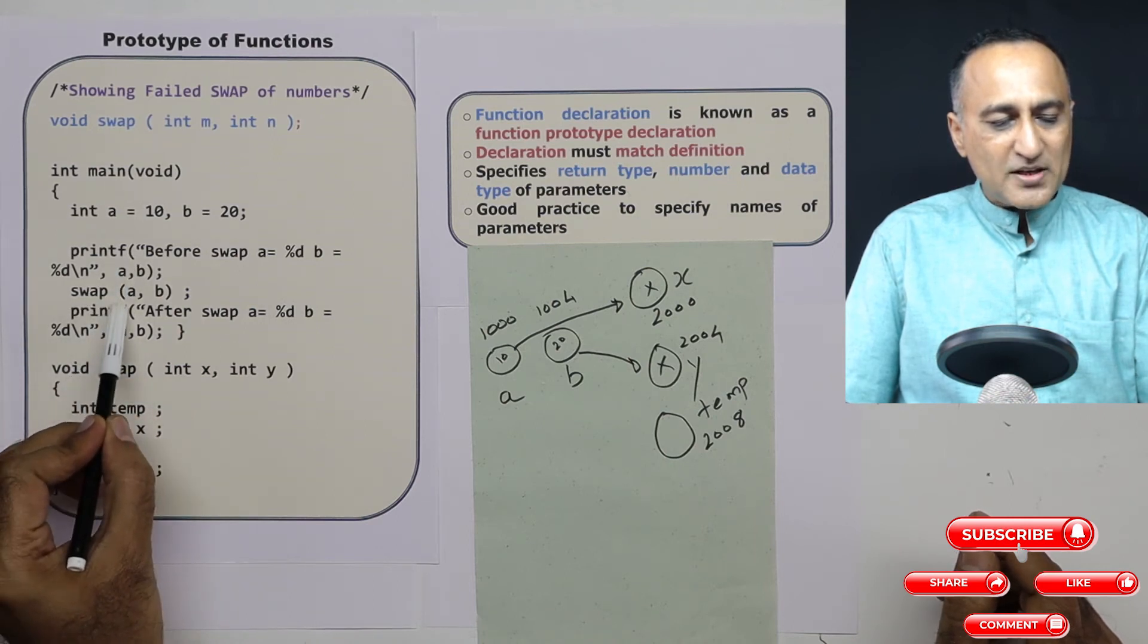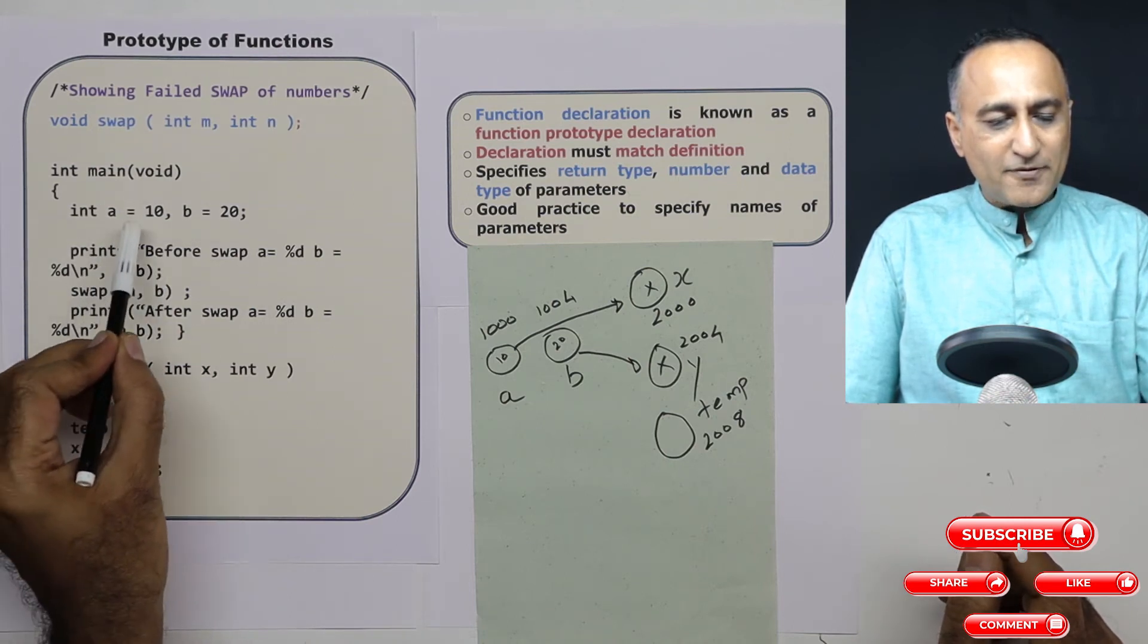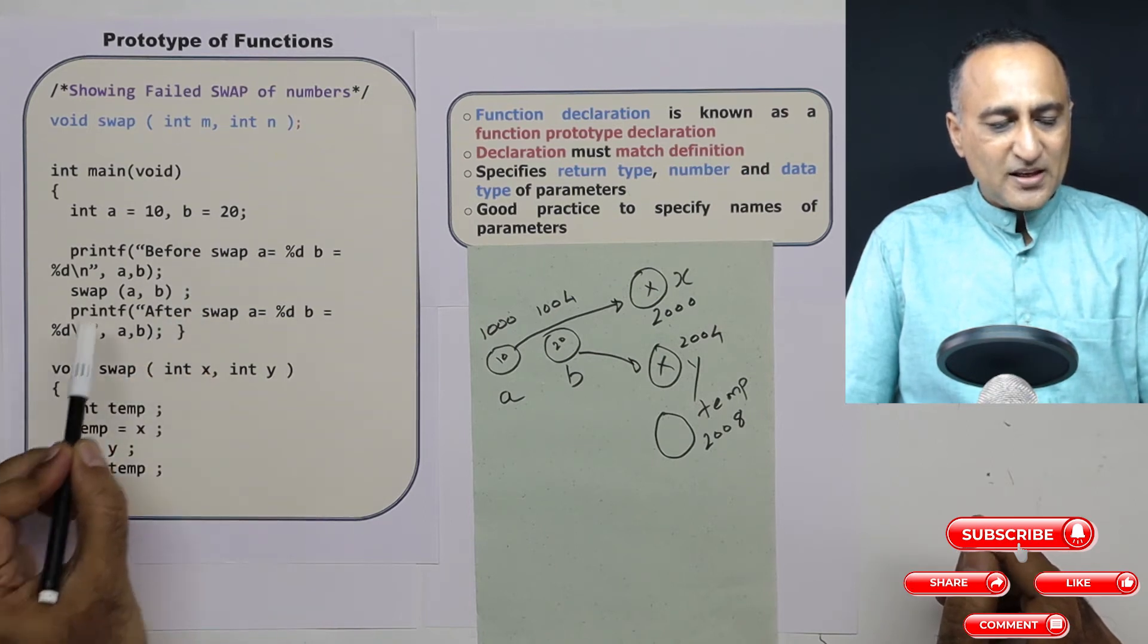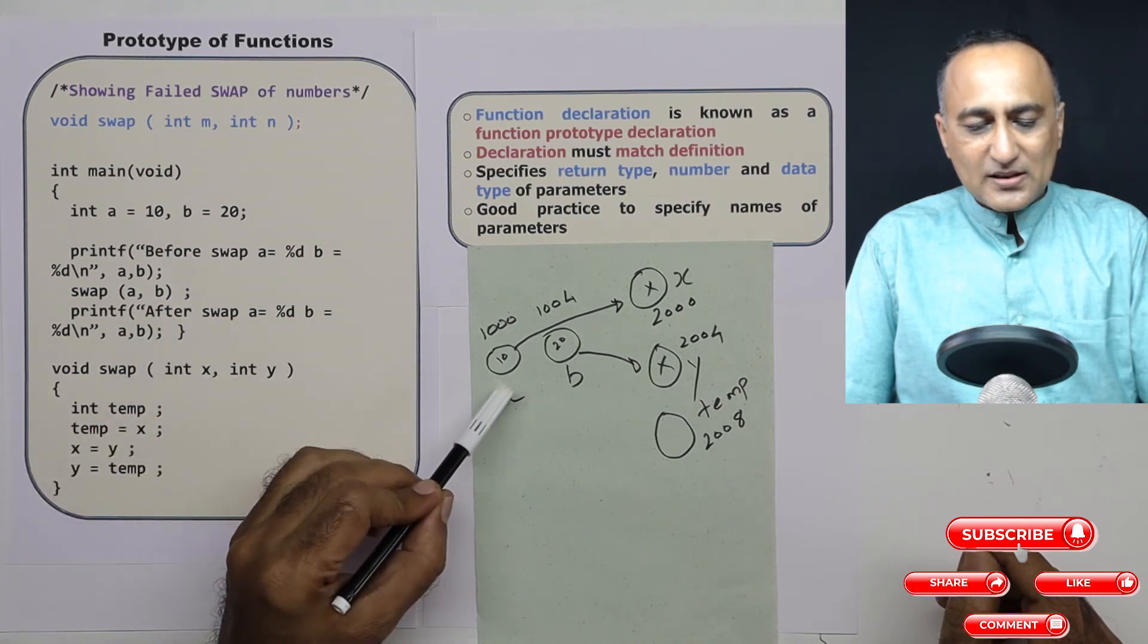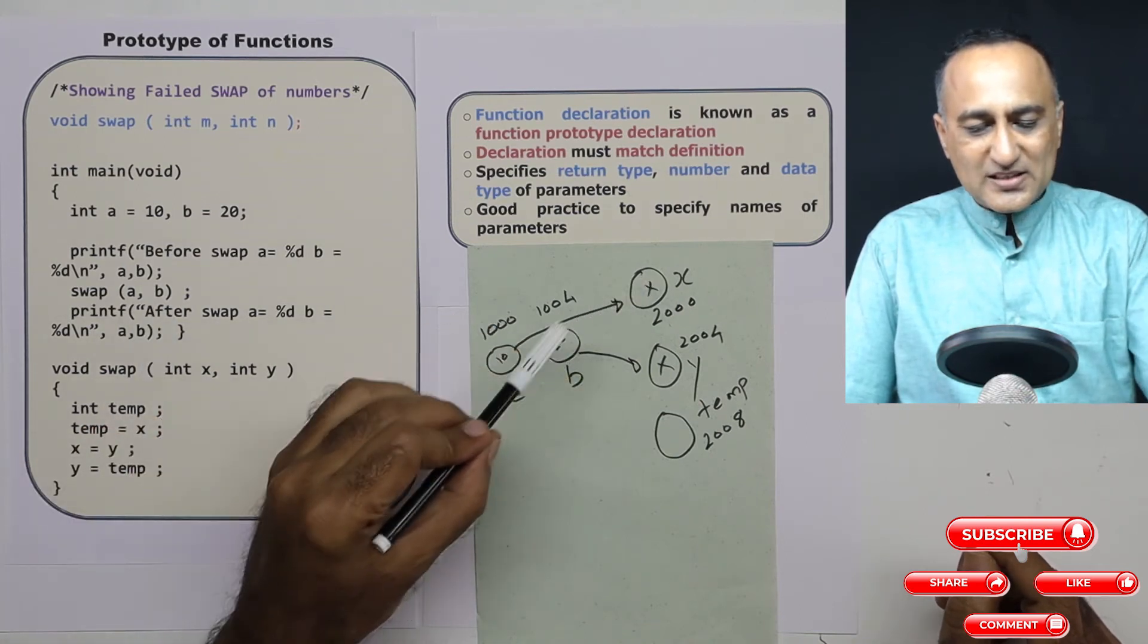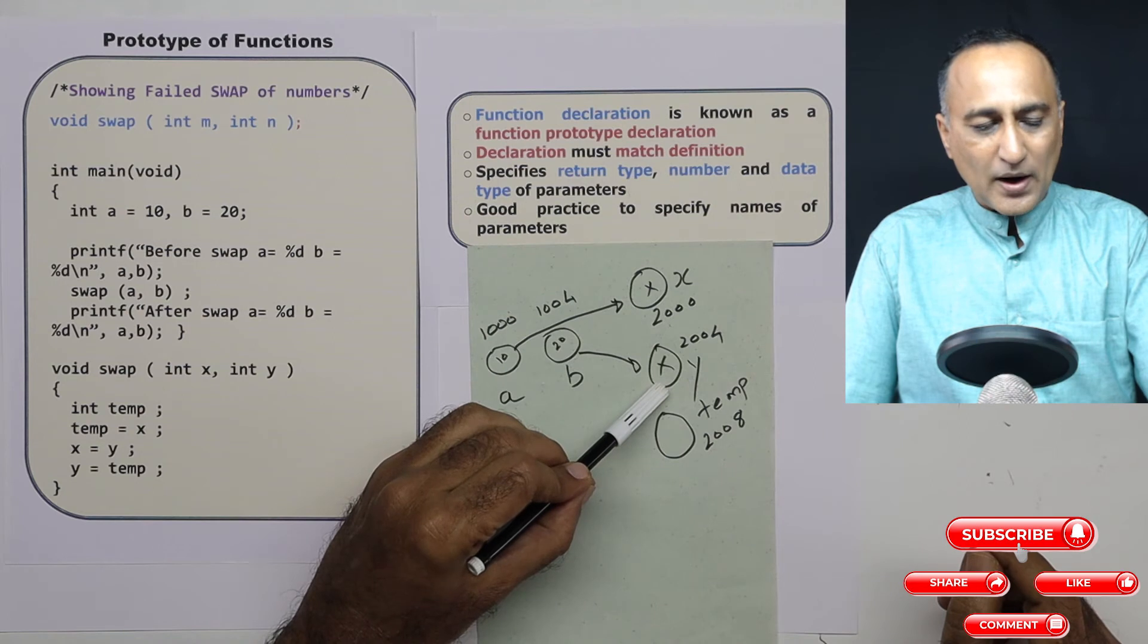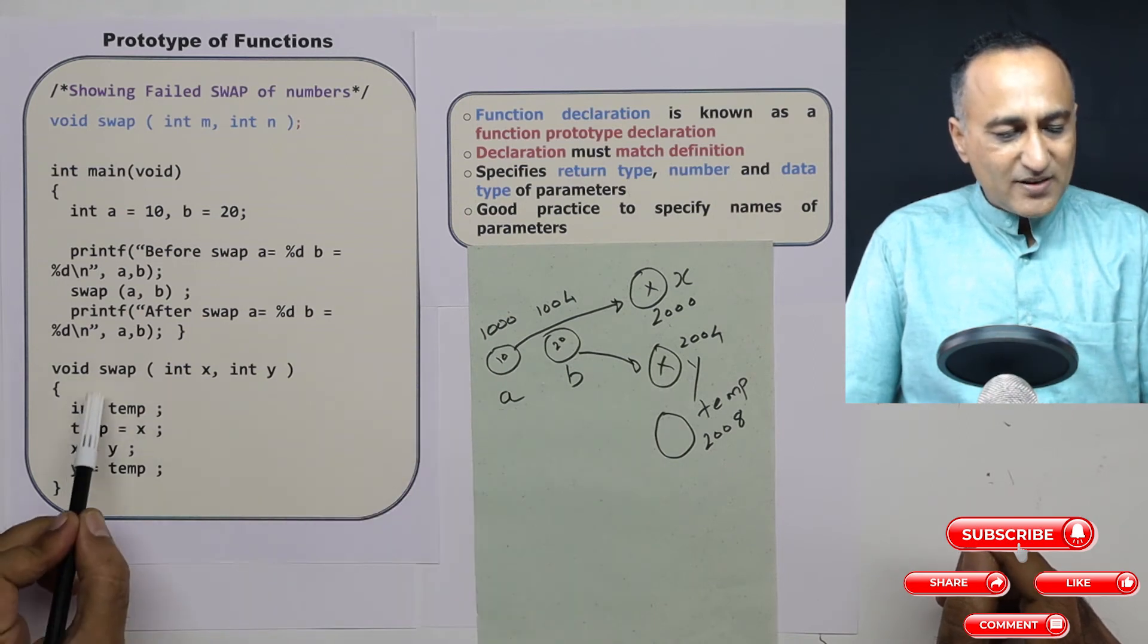Now if I print the value of A and B before I am calling swap, it will print the value of A as 10 and B as 20. Then what I do is I call the function called swap AB. The value of A is copied to x, the value of B is copied to y.